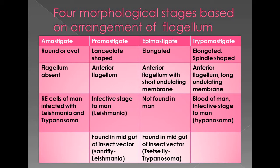Amastigote is always an intracellular form, present in both Leishmania and Trypanosoma. In this lecture, we will discuss only Trypanosoma. Promastigote is the infective stage to man, present in the insect vector sandfly.